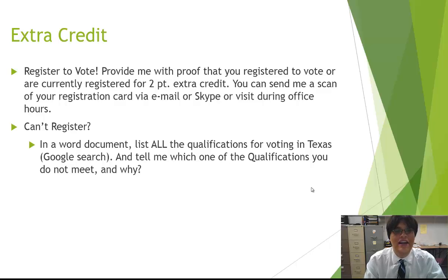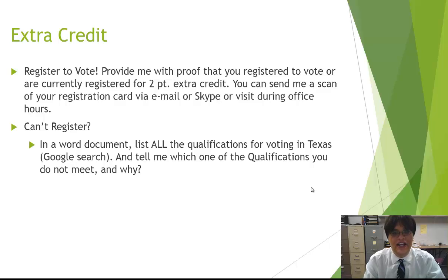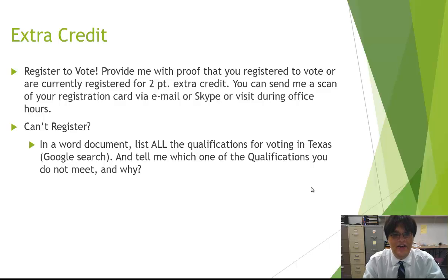However, there are certain people that can't register to vote, and I've gotten a lot of emails on this topic. If you don't qualify, in a Word document, list all the qualifications for voting in Texas — you can find these with a Google search for 'Texas voter registration requirements.' Then tell me which qualification you don't meet and why — for example, you may not meet the age requirement. Put that in the extra credit drop box for your two points. If you do qualify, just send me a scan of your registration card or application.